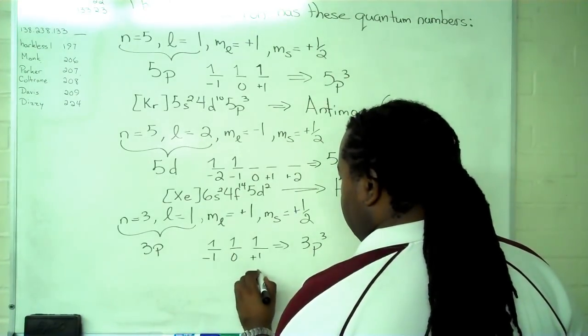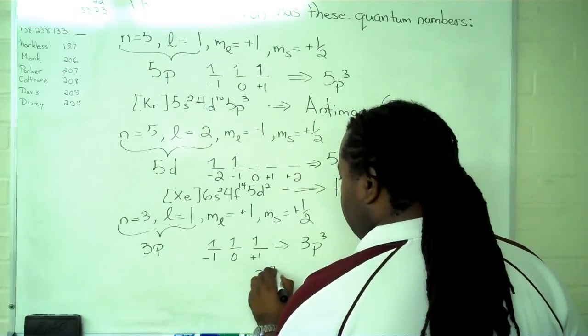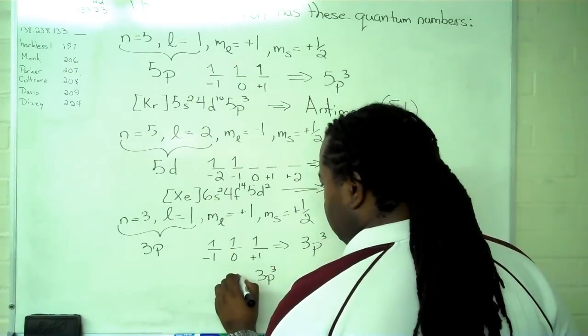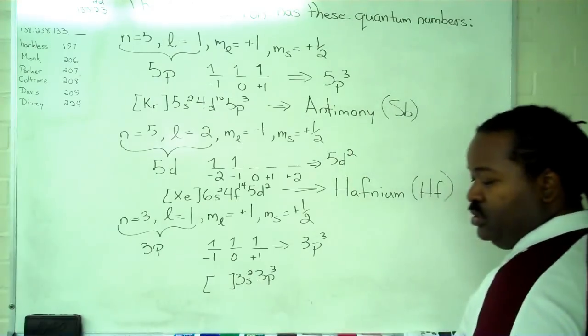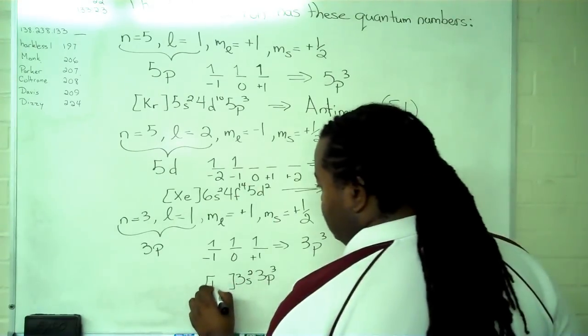And now we can use the Aufbau principle to fill in everything else. And we get 3p3, 3s2, and the thing that precedes it is neon.